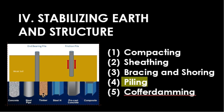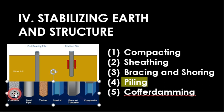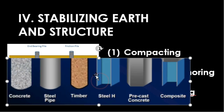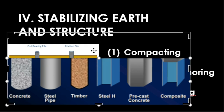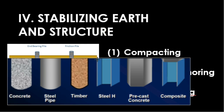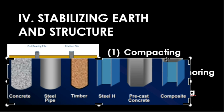Different types of piles can be made of concrete, steel, timber, H-steel, precast concrete, or composite materials. Composite piles are a combination of concrete at the top and steel below.